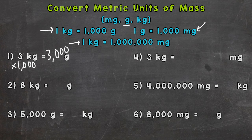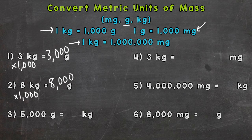Next, we have eight kilograms equals how many grams? So eight groups of a thousand. When we're going from kilograms to grams, we multiply by a thousand, just like number one, except we have eight kilograms here. So we're going to end up with 8,000 grams. Eight kilograms equals 8,000 grams.